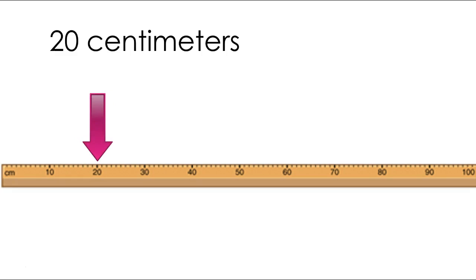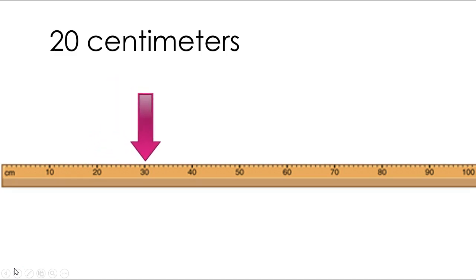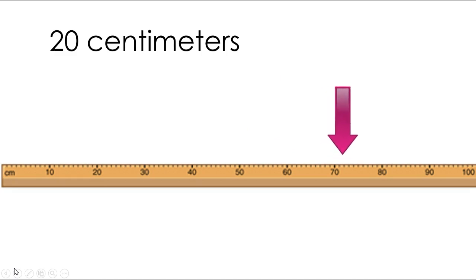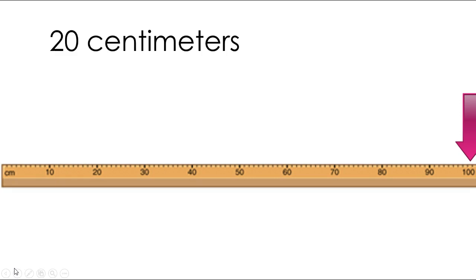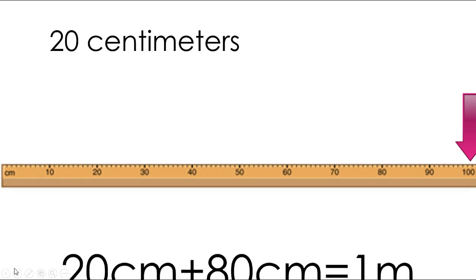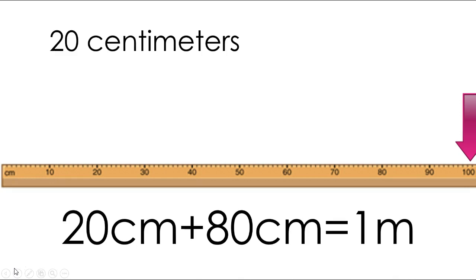We're starting at 20 on this one. Count how many more centimeters we need to make 1 meter, then write your number sentence. Push pause and then push play when you're done. Let's count — remember, we're counting by tens: 10, 20, 30, 40, 50, 60, 70, 80. We need 80 more centimeters to make 1 meter. I wrote down 20 centimeters plus 80 centimeters equals 1 meter. Did you get the same thing? If you did, kiss your brain. Good job.